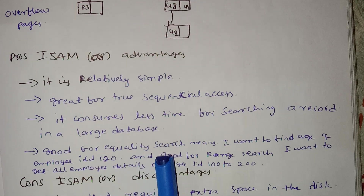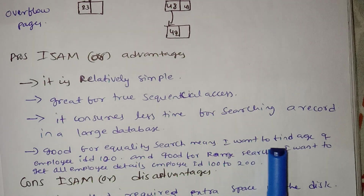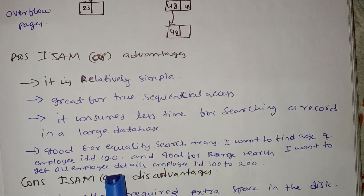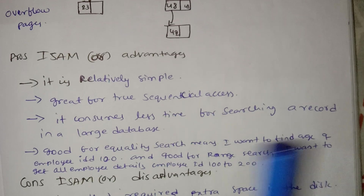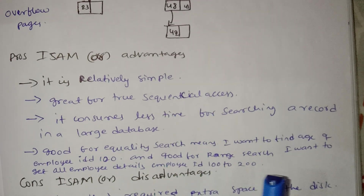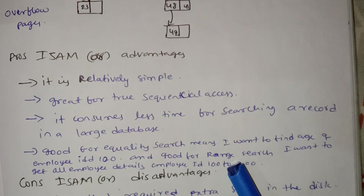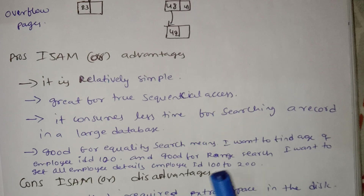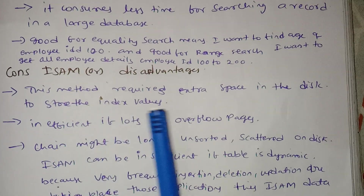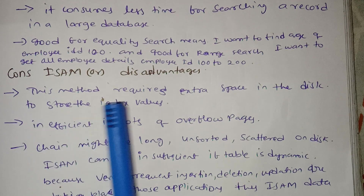ISAM is good for equality search — for example, finding the age of employee with ID 100 — and good for range searches, such as getting employee details for IDs 100 to 200.